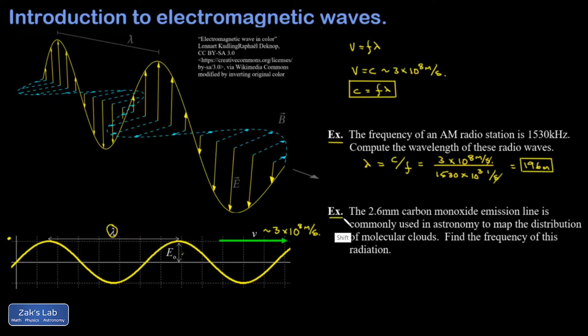In the second example, we turn the problem around. So we're given the wavelength of this carbon monoxide emission line as 2.6 millimeters. So this is a common observational wavelength in astronomy because the carbon monoxide in the molecular clouds in the galactic disk emits electromagnetic radiation at this wavelength. So astronomers use this to map molecular clouds.